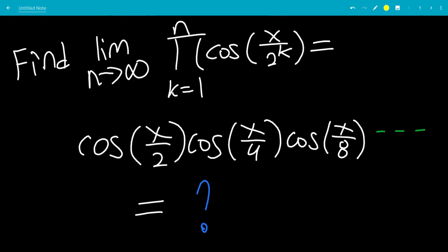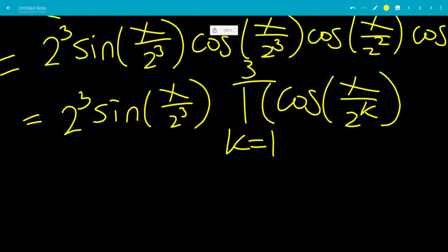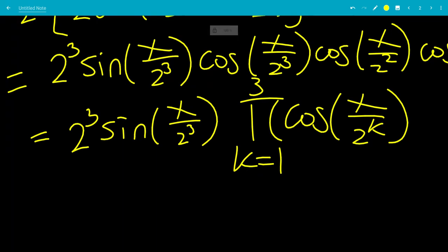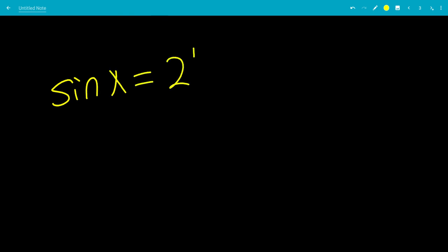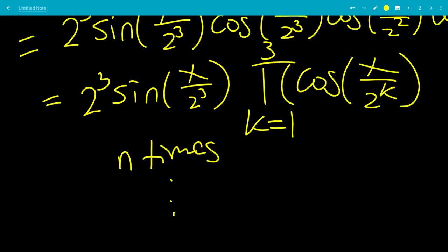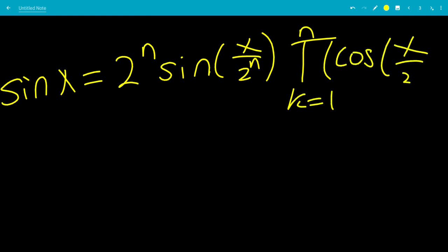That is similar to what we have, but goes all the way up to n. We can infer that the 3 is going to be n — we can do this n times. So now we have that sine x equals 2 to the n times sine of x over 2 to the n, times the product from k equals 1 to n of cosine of x over 2 to the k.